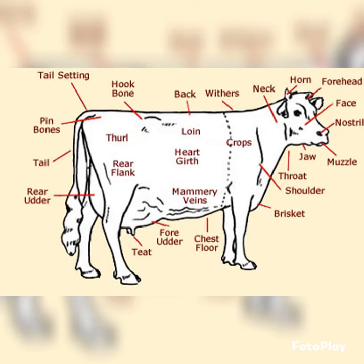Let's learn the different parts of a cow. There's the brisket, the chest floor, the foray, udder, teat, rear udder.